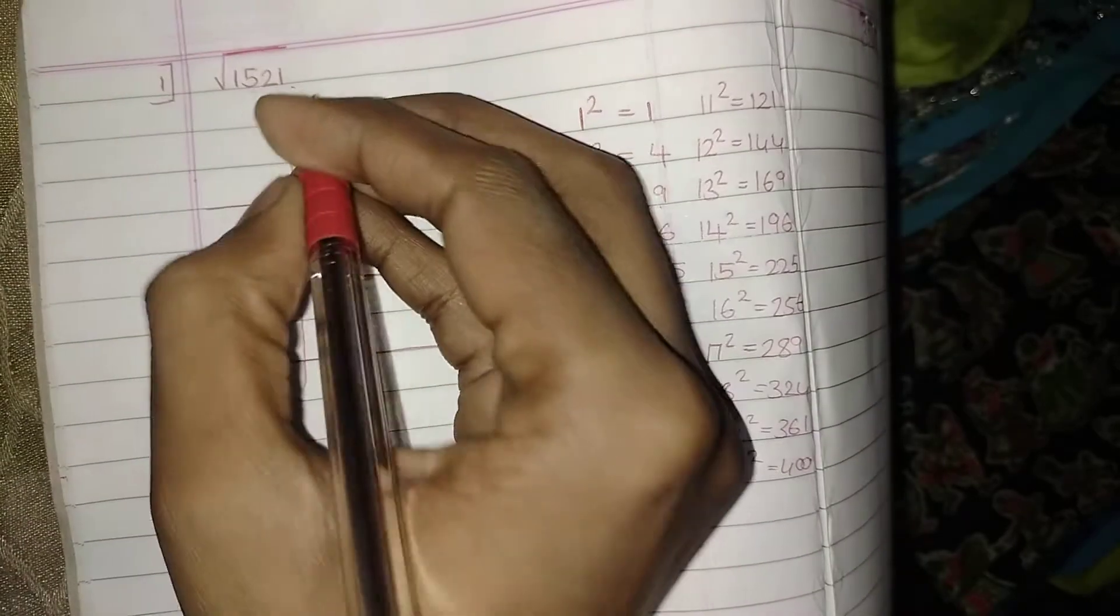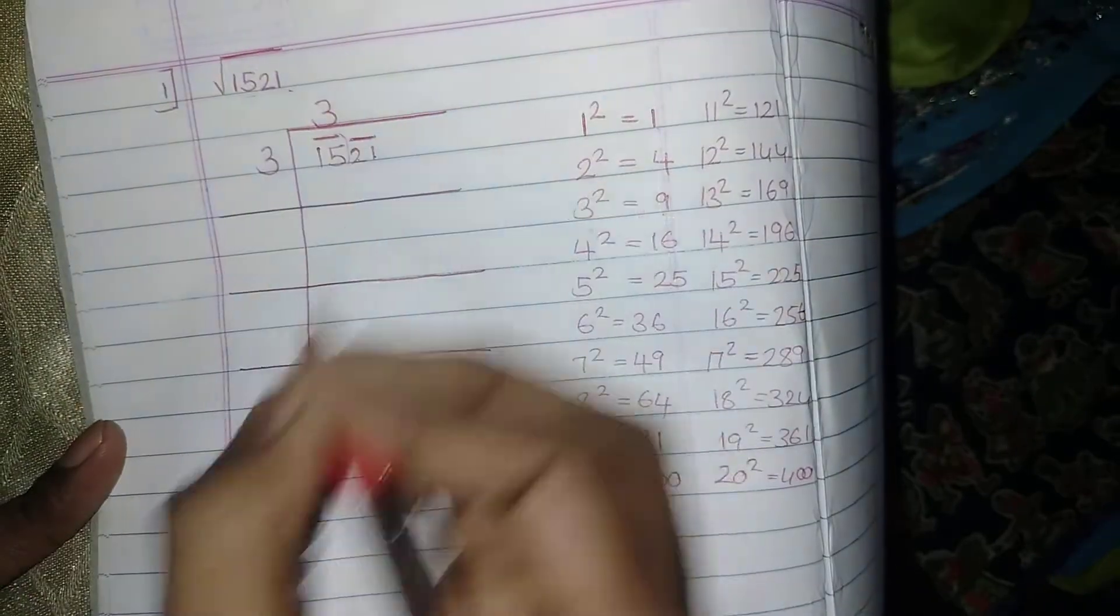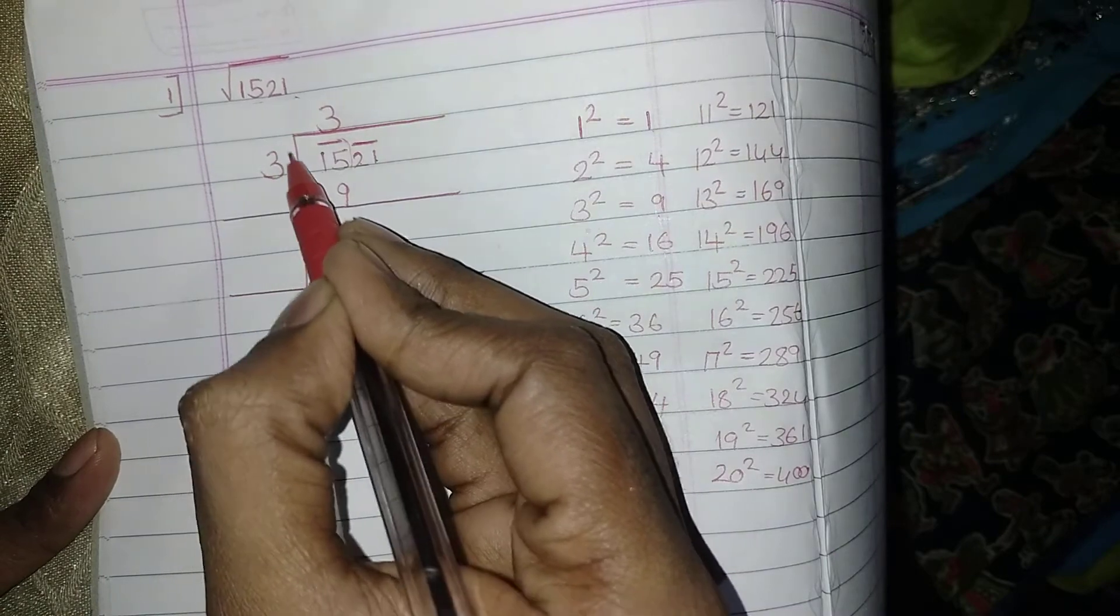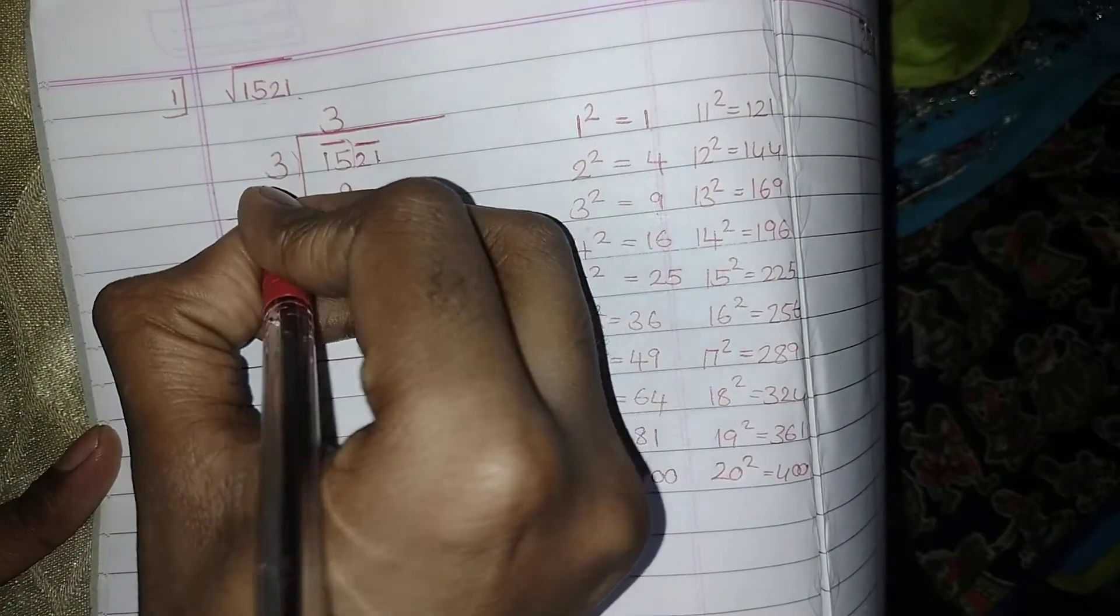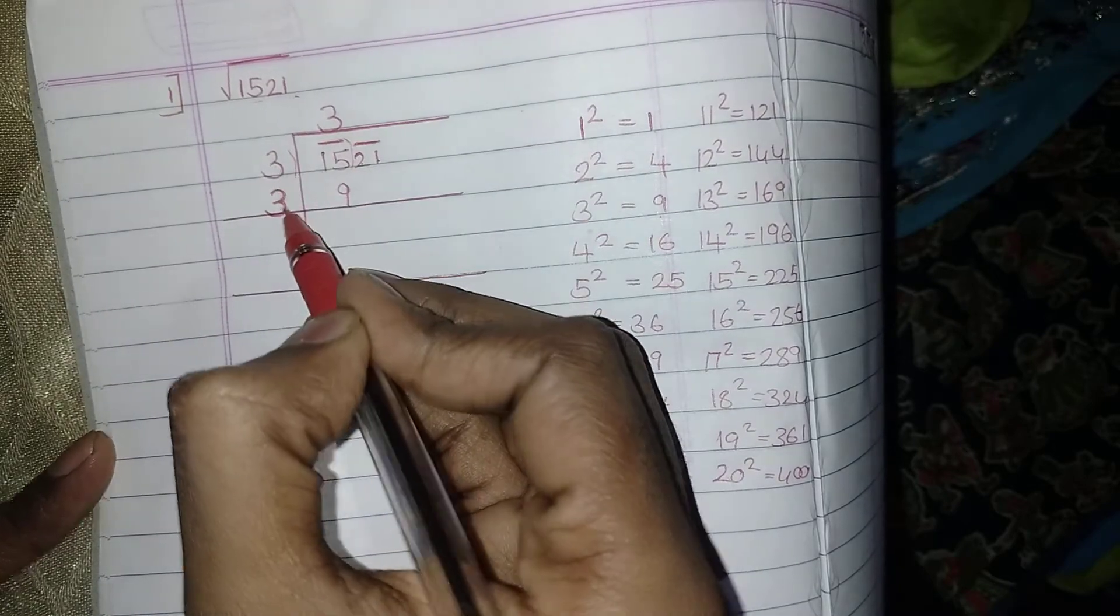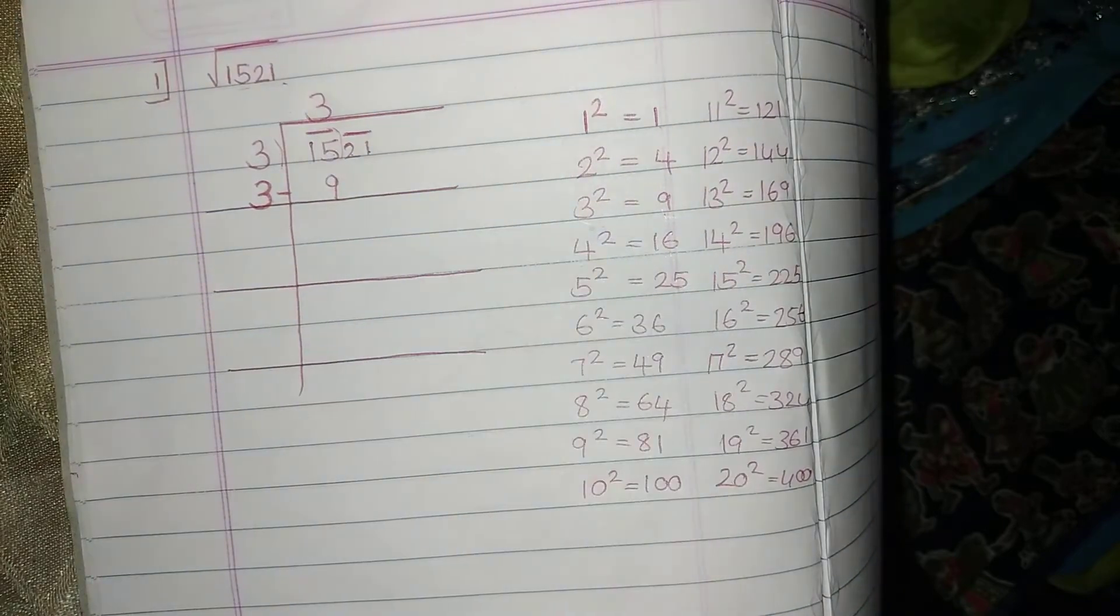Correct, so when I am getting that 9, 3 square, so that is the first step. 3 times 3 are 9. Once I put the number 3, whatever number I am putting here, I am just going to write that number again down. The same number what I written here, I have to write it again.